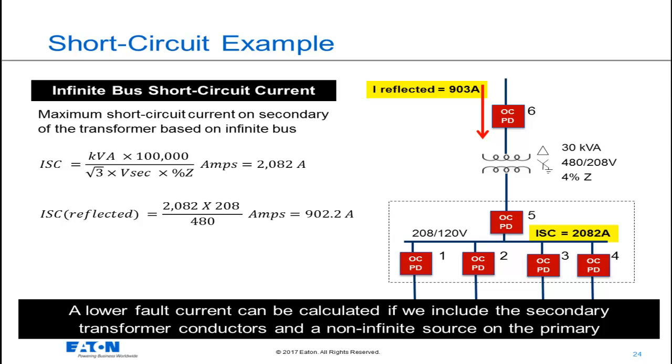This could reduce the available short-circuit current at the secondary panel, but will depend upon the size of the conductor and the length of that conductor. We're also omitting the fact that we will not have an infinite bus on the primary. We will probably be starting with some lower level of short-circuit current at the primary of the transformer. But these omissions may, in reality, be insignificant to the process that we'll be following.